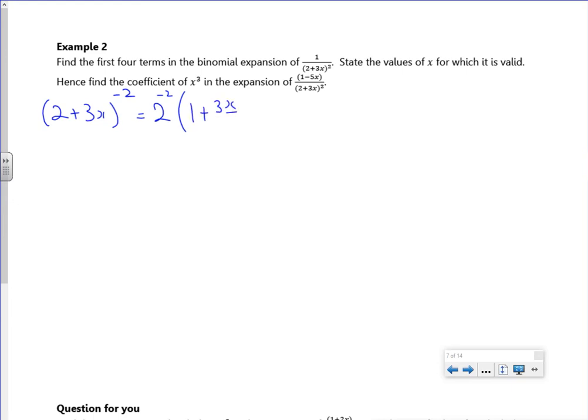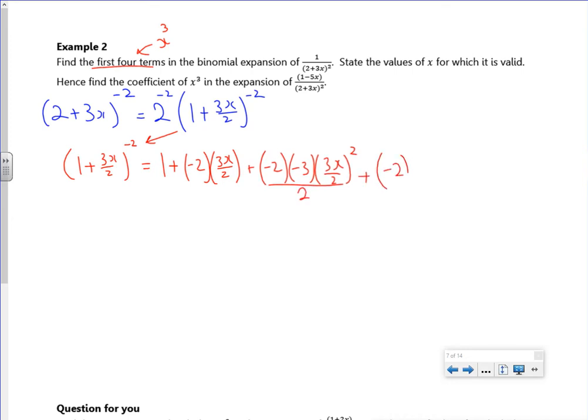1 plus 3x over 2 to the minus 2. Do that little mini-expansion, so 1 plus 3x over 2 to the minus 2, so 1 plus n, x, 1 over just the four terms, so that's going to x cubed again, n, n-1, x squared over 2, n, n-1, n-2, x cubed, 3 times 2.